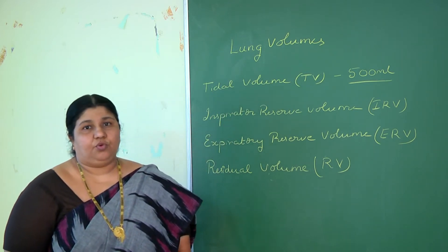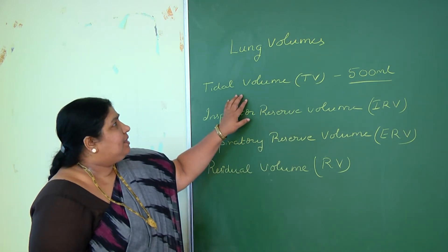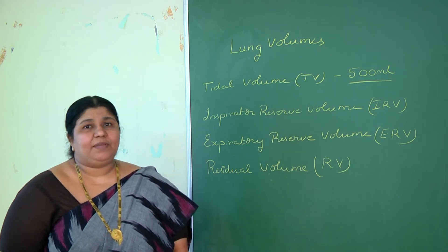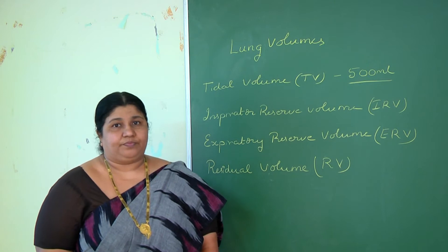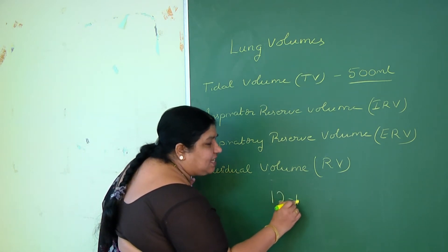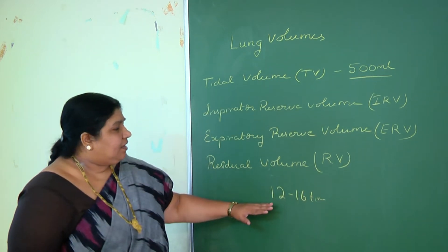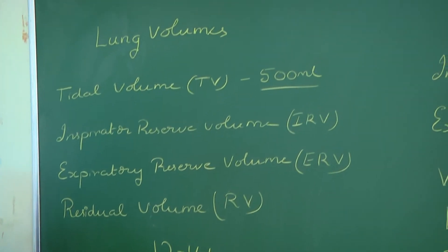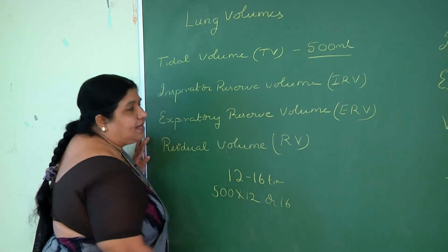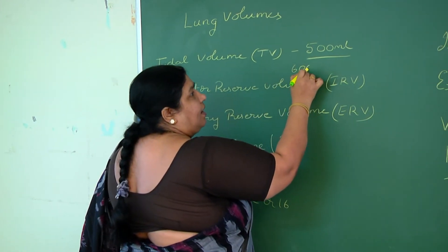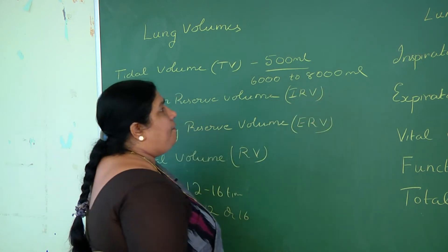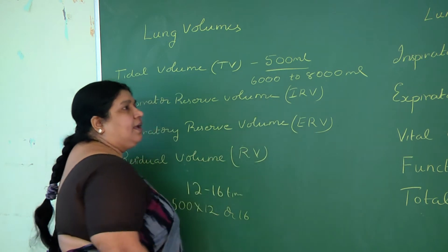What is the minute tidal volume? For one breath we are taking 500 ml of air, so for one minute, how much air will be going into our lungs? That gives the minute tidal volume. The value falls between 6,000 to 8,000 ml — minimum 6,000, maximum 8,000 ml — which is the minute tidal volume.